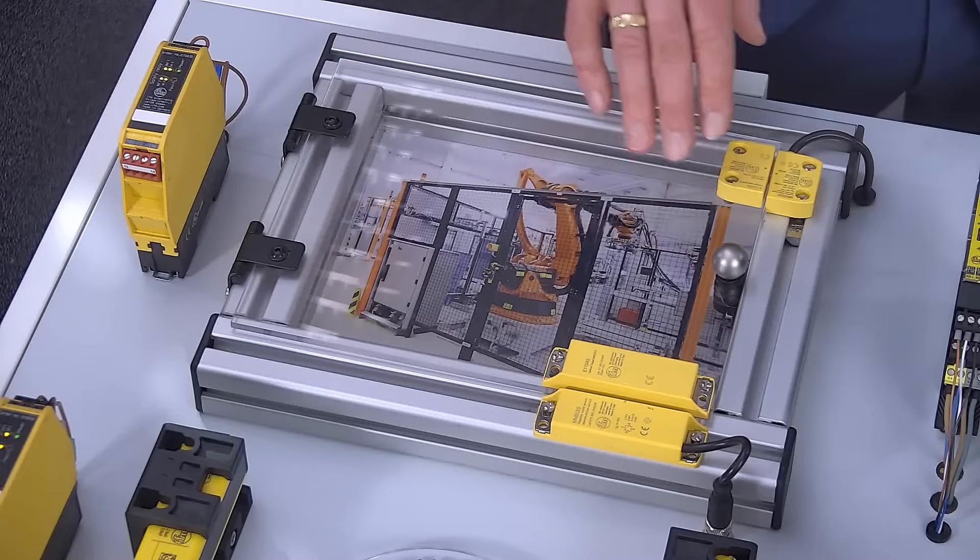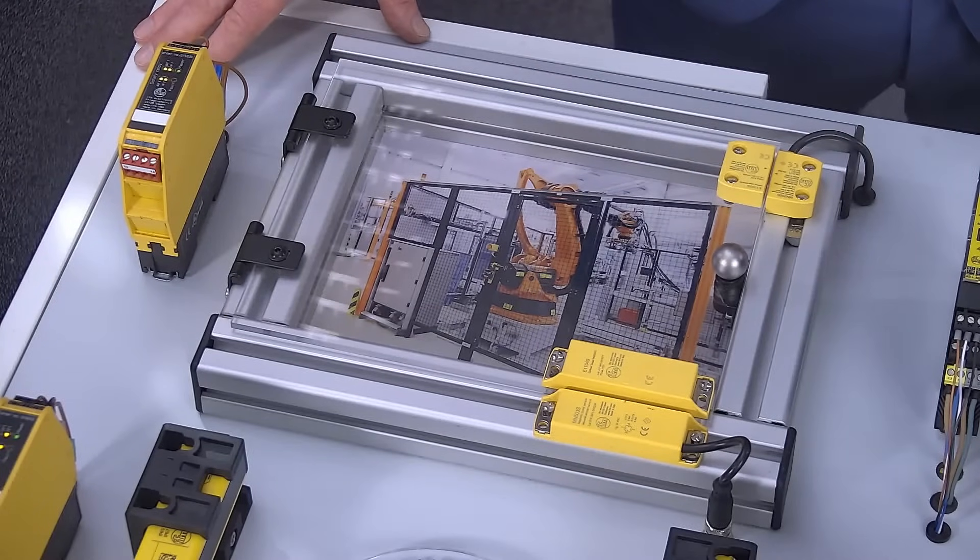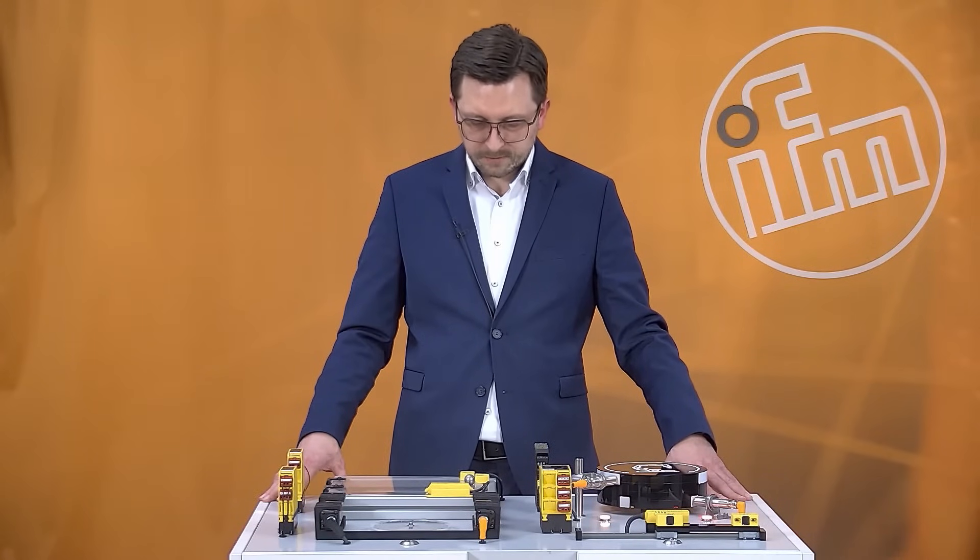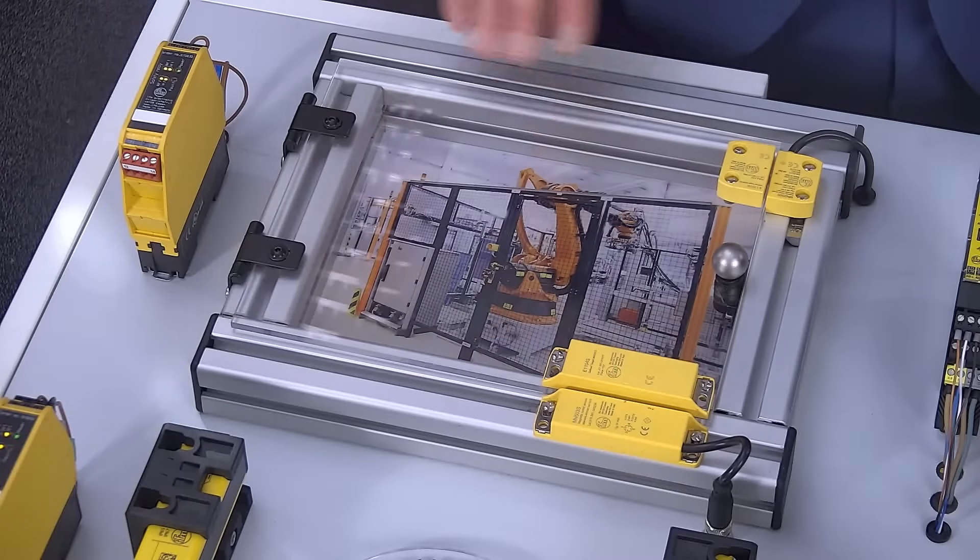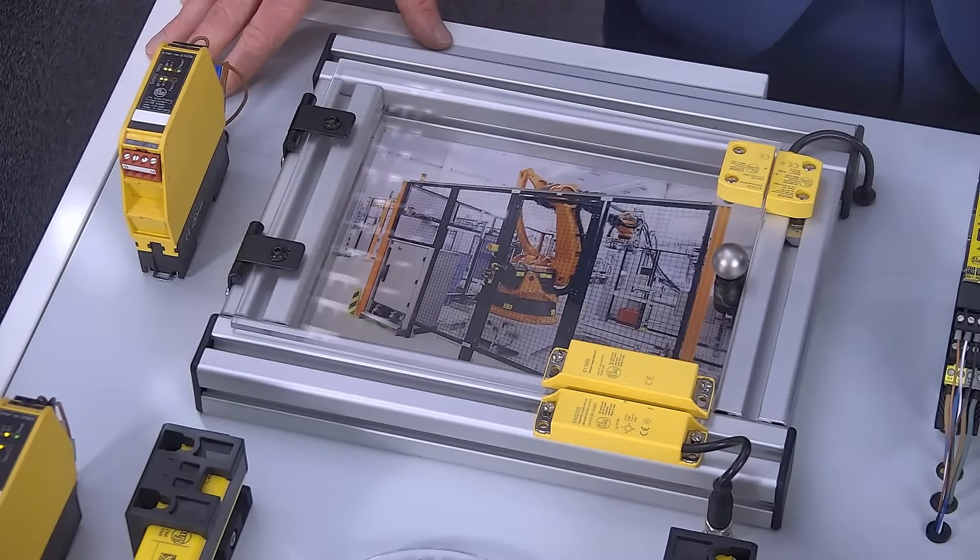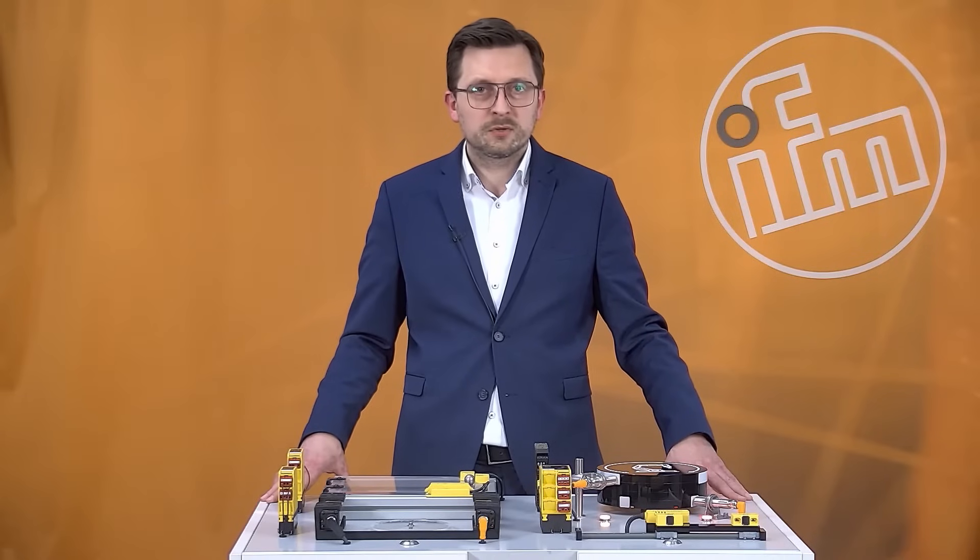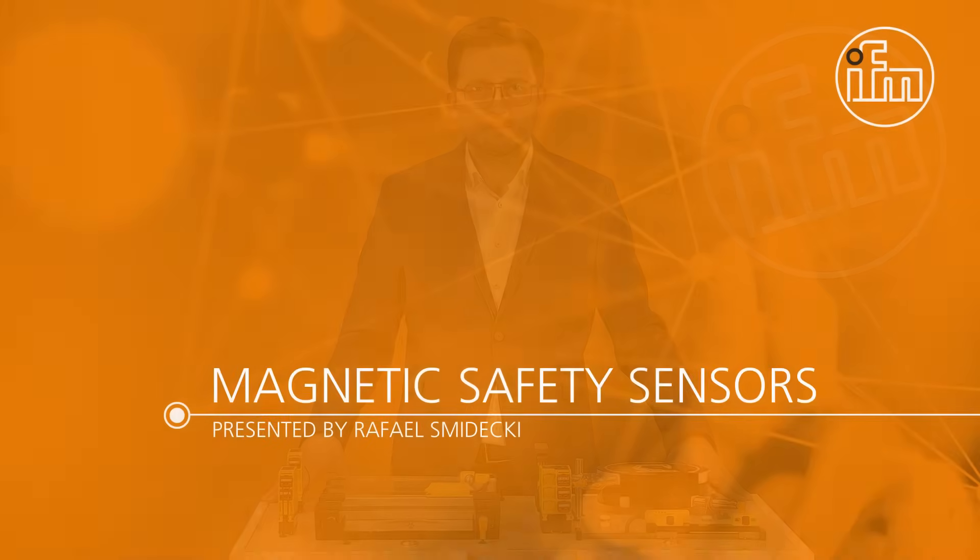The small housing version also offers applications with less space and easy mounting. The magnetic sensors can be daisy-chained quite easily with a corresponding safety relay monitor or safety PLC.